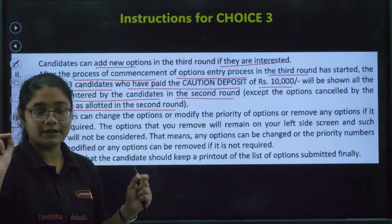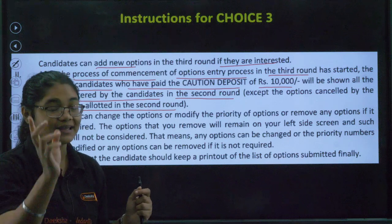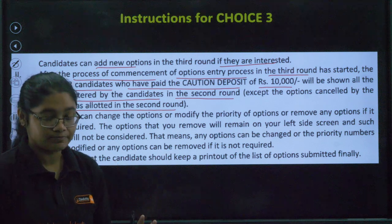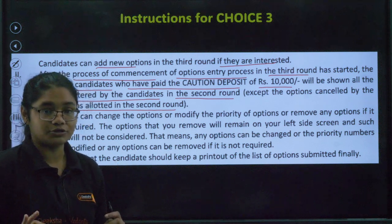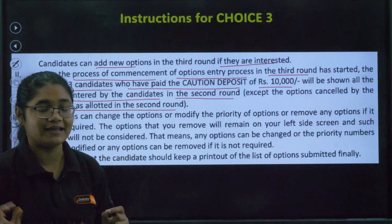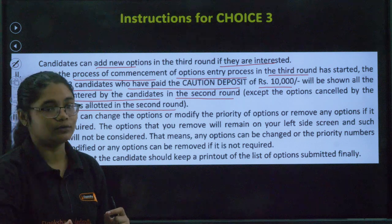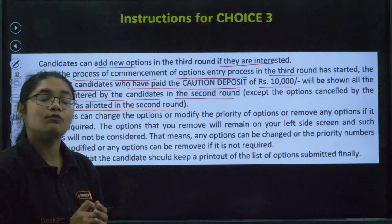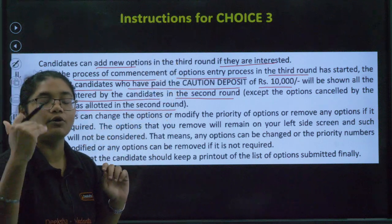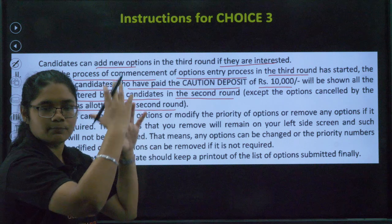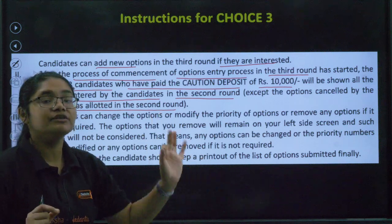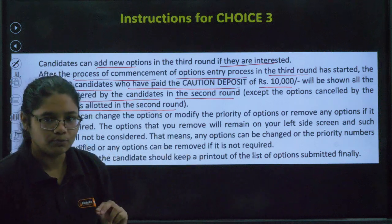If you have already paid the caution deposit of ₹10,000 in Round 2, then only you will be allowed to participate in Round 3. If you have not paid the caution deposit, you can still pay right now till 8th September — please make the payment and then participate in Round 3. All the options you have entered will be visible on the right hand side of the portal. Only the one option you rejected in Round 2 will not be visible.